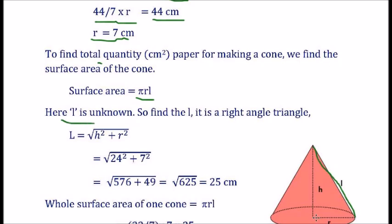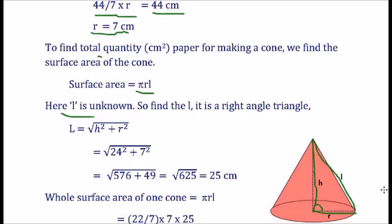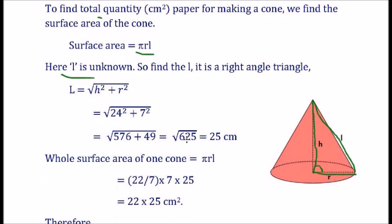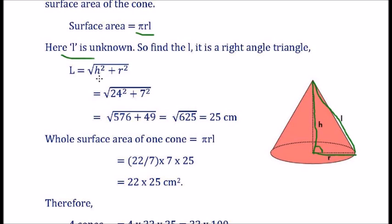That is the right angle triangle. So, h is given. R is, we know, we want to find the l. So, l is equal to √(h² + r²). That is equal to √(24² + 7²). That is equal to √(576 + 49). That is equal to 625. That is 25 cm.